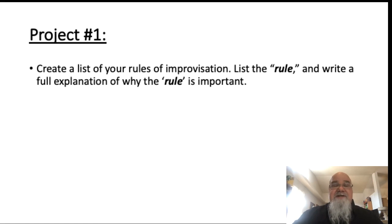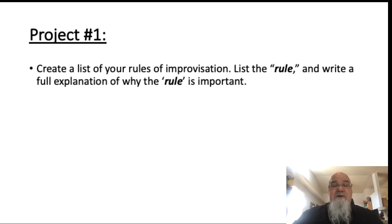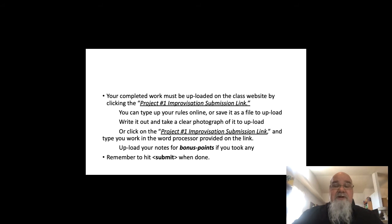Project one will be due first. Create a list of your rules of improvisation — don't just copy from Miss Fey, put them into your own words. I want you to list the rule, for example 'rule number one is this,' and then explain why the rule is important: what happens if we don't follow it, or what happens if we do follow it.